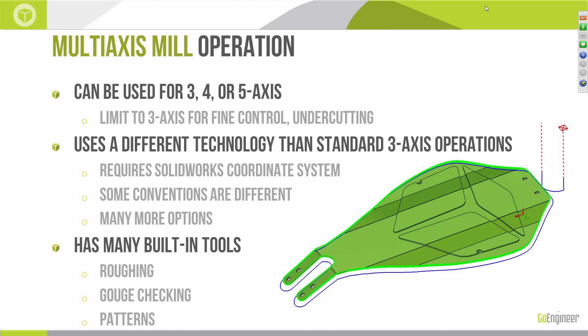The multi-axis mill operation actually uses a different technology than the standard three-axis toolset. For that reason, there are some differences in how we use it. Some of the options are going to be different — we're going to have different naming conventions in some areas, and many more options than we're used to seeing. One of the things we're going to be doing is creating a SOLIDWORKS coordinate system on each one of our parts to help orient this multi-axis mill operation.